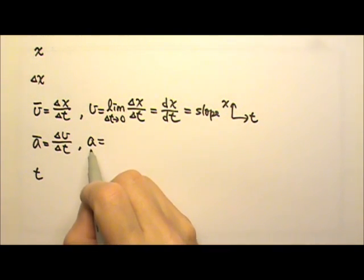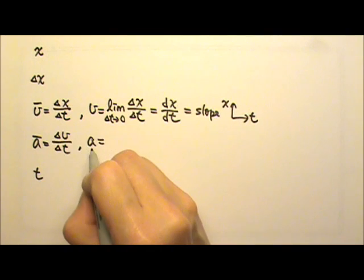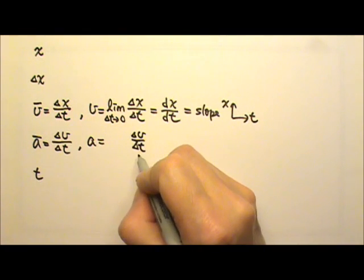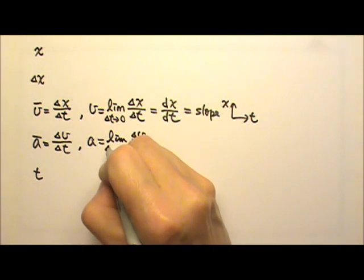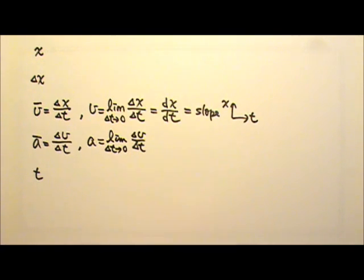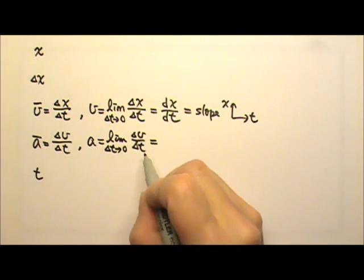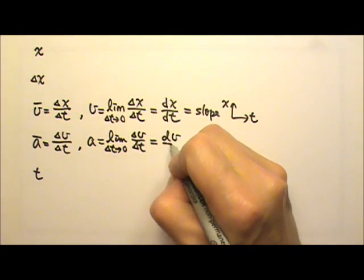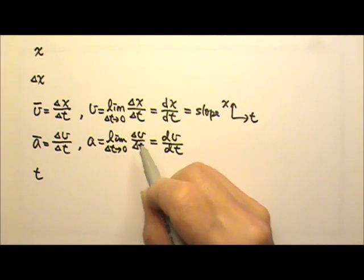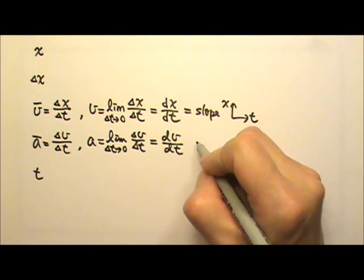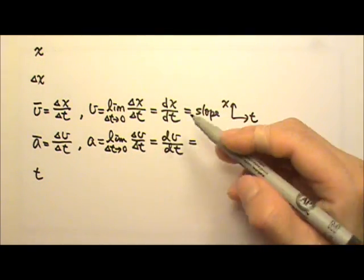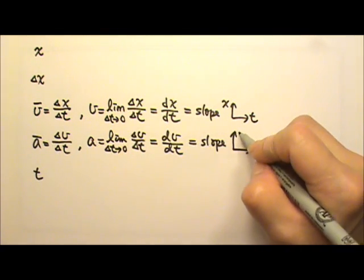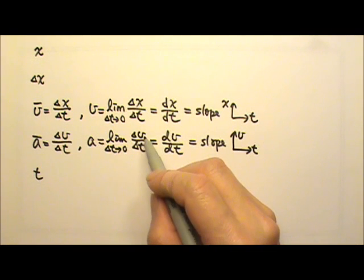Instantaneous acceleration is also an average acceleration taken under the limit when the time approaches zero. Again, this is the definition of a derivative, and it equals dv/dt. Since this is rise over run, it will be the slope of a graph — specifically the slope of the velocity versus time graph.